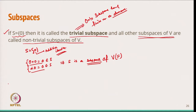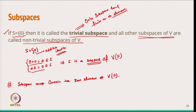The next thing is how we can check whether a set is a subspace or not. One important property is that a subspace must contain the zero element — the additive identity — of the vector space V. If it does not contain the zero element, then it is not a subspace.